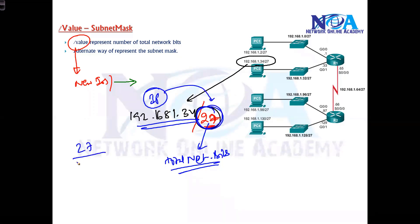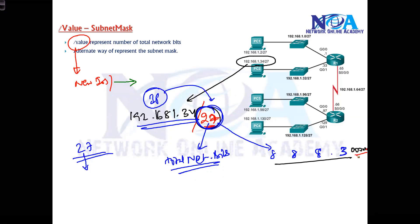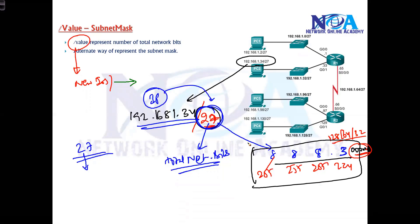27 network bits means: 8+8+8 = 24, and 3 more bits. The remaining bits are zeros. So the subnet mask is 255.255.255 for the first three octets, and for 3 bits: 128 + 64 + 32 = 224. So the subnet mask equivalent to /27 is 255.255.255.224.